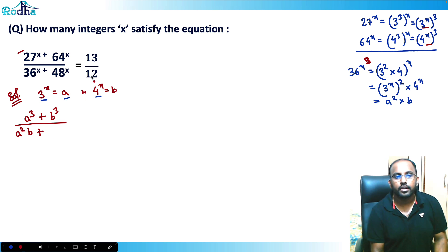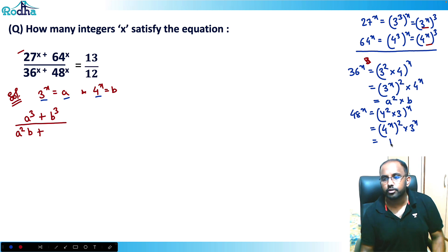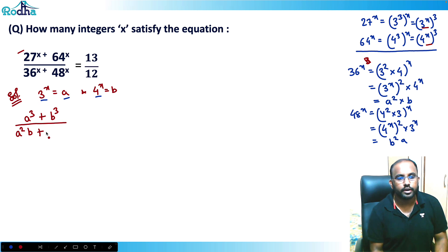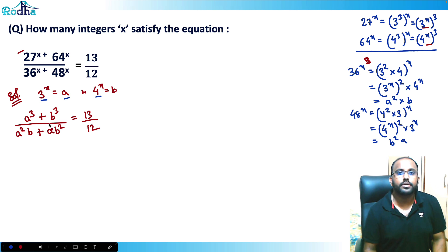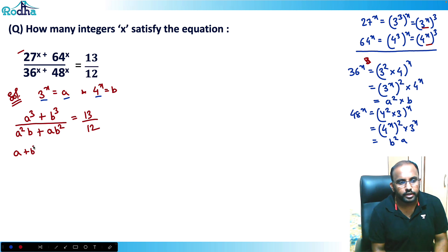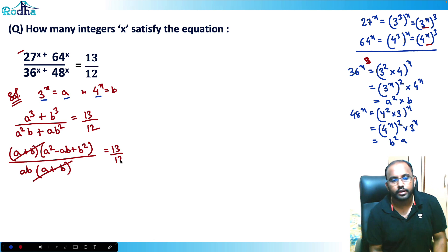And 48^x = (4² · 3)^x = (4^x)² · 3^x = b²a. So the denominator is a²b + ab². Using the identity a³ + b³ = (a+b)(a²-ab+b²), and factoring ab from the denominator giving ab(a+b), the (a+b) terms cancel, leaving (a²-ab+b²) / ab = 13/12.